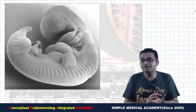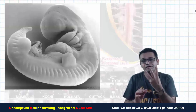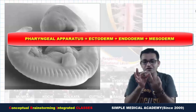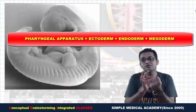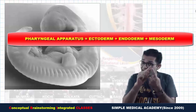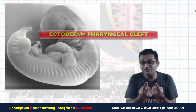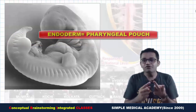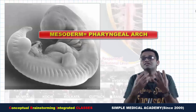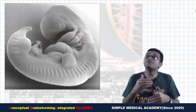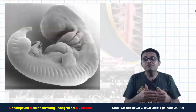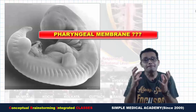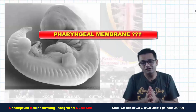This pharyngeal apparatus is made up of three main components. One is the ectoderm, another is the endoderm, and another is the mesoderm. The ectoderm is known as the pharyngeal cleft, the endoderm is known as the pharyngeal pouch, and the mesoderm is known as the pharyngeal arch.